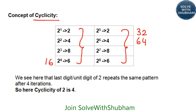After 4 iterations the pattern is repeating. Therefore, the cyclicity of 2 is 4. It means 2 to the power 4n will always end with 6.